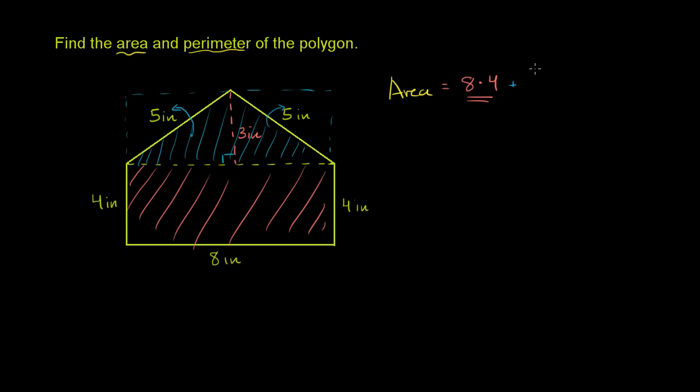So plus 1 half times the triangle's base, which is 8 inches, times the triangle's height, which is 4 inches.